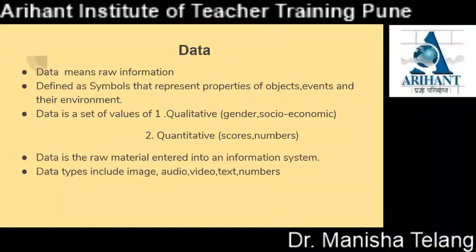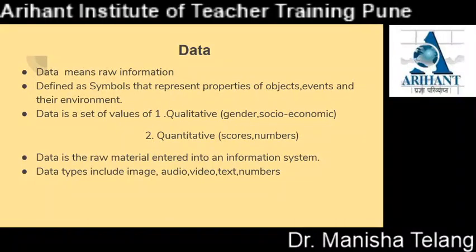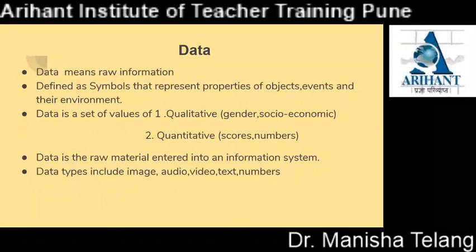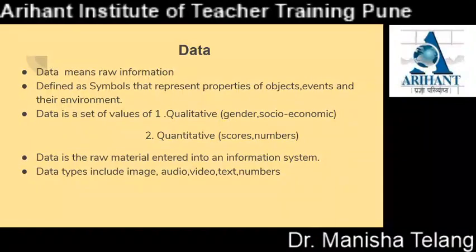Data means raw information, which also defines a symbol that represents properties of objects, events and their environment. Data are of two types: qualitative data and quantitative data. Quantitative data means anything that can be expressed as a number. Qualitative data cannot be expressed as a number — data that represents nominal scales such as gender, socio-economic status, and personality. Data is the raw material entered into an information system.